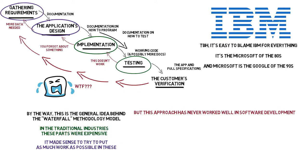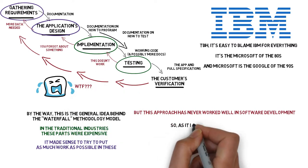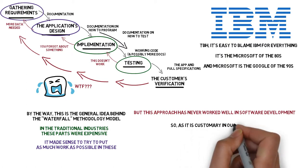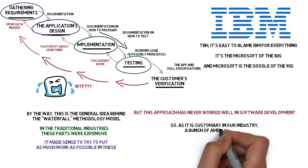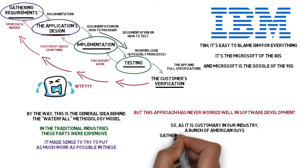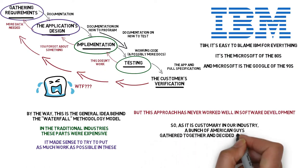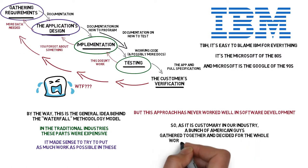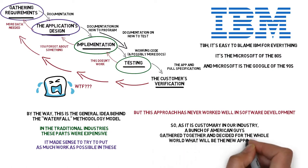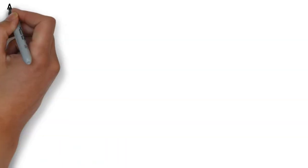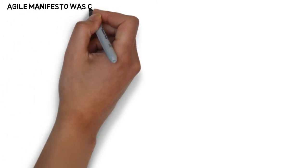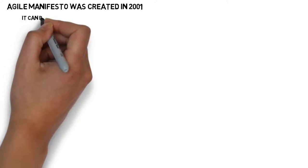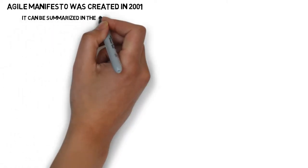Agile points out that software development is fundamentally different from other industries. So different that we should reorganize the whole process around developers — that is, designers, programmers and testers — working together closely and on equal footing. And not only that, we can also change the way we think about organizing the development process itself. What if it doesn't have to be written down in a book the size of a brick? What if it can be a result of interaction between developers, managers and agile coaches — people interested in how all of this works and how to make it better? In broad terms, Agile can be summarized in the following four principles.